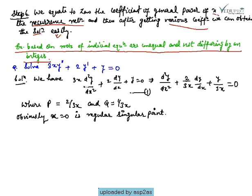The example is: solve 3x·y'' + 2y' + y = 0. First we write it in standard form: d²y/dx² + (2/3x)·dy/dx + y/(3x) = 0. Here p = 2/(3x) and q = 1/(3x). It is obvious that x = 0 is a regular singular point.